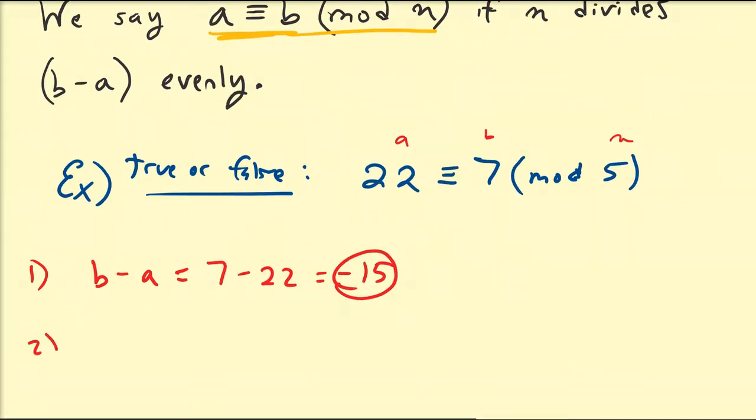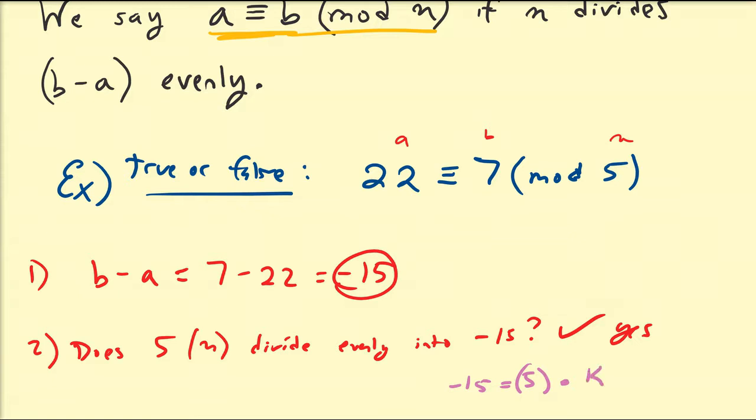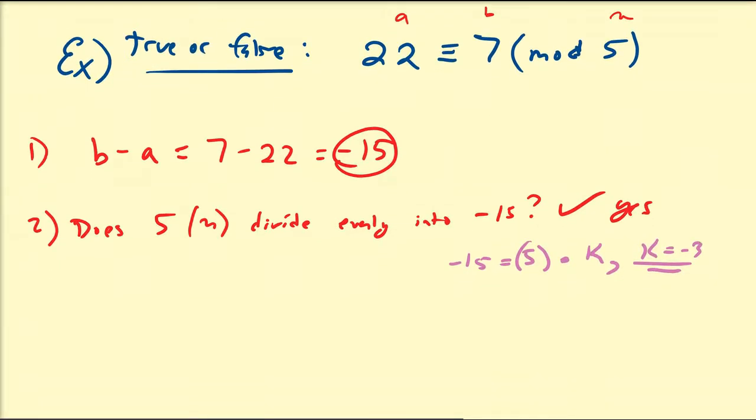The second step is, does 5, which is n, divide evenly into negative 15? The answer is yes. Because there exists an integer such that negative 15 is equal to the number we're interested in times some integer k. In this case, k is equal to negative 3. So yes, 5 divides evenly into the difference between a and b. Therefore, 22 is congruent to 7 modulo 5.